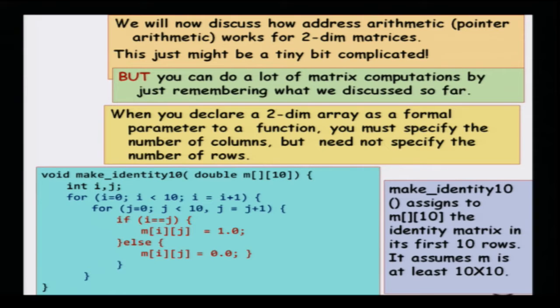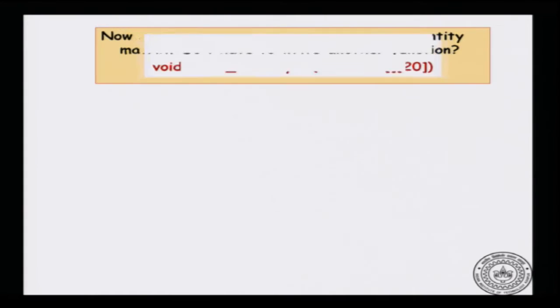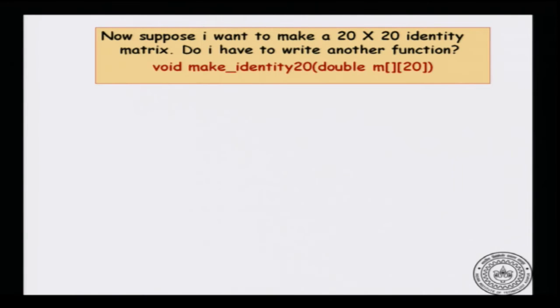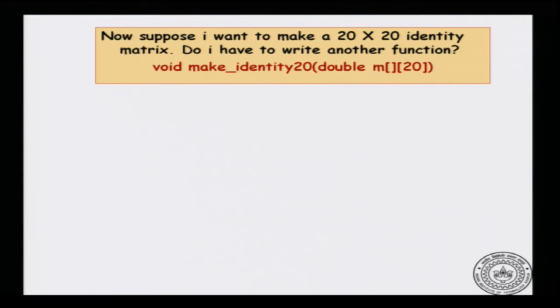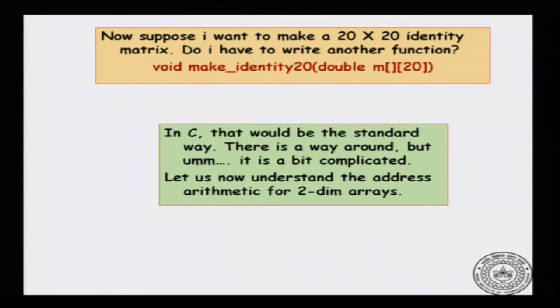This creates a matrix of size 10 by 10. This is a very strange code because it is a function that essentially makes exactly one matrix. It would be nice to have a function that can create arbitrary size identity matrices. For example, if I wanted a 20 by 20 matrix it looks like I have to write another function make_identity_20 with 20 columns specified. There is a slightly more complicated way to accomplish a function which can take an arbitrary size.